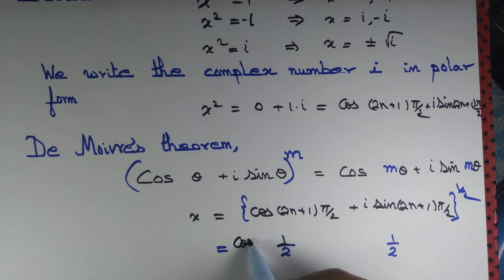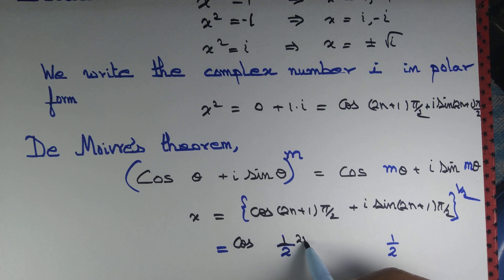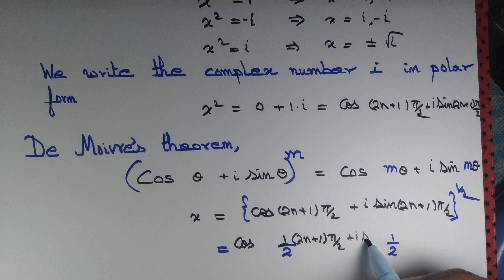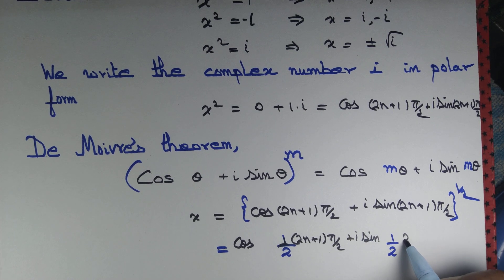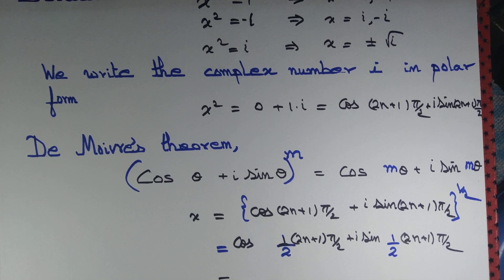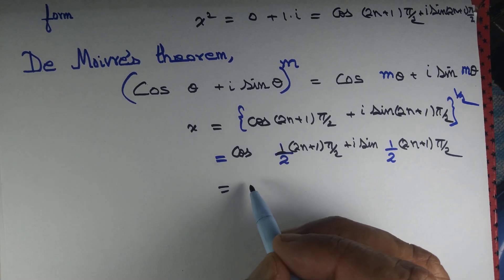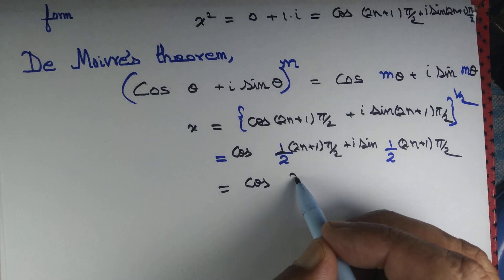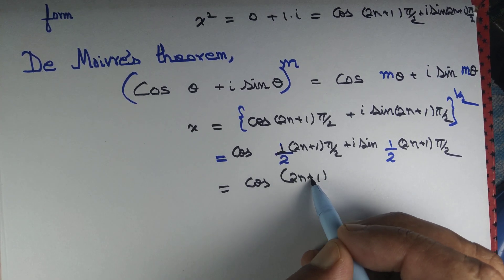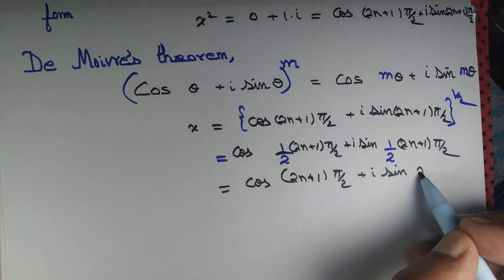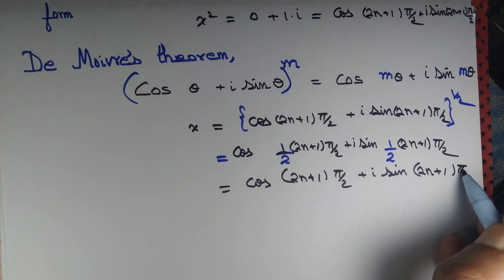So we get x = cos((2n+1)π/4) + i sin((2n+1)π/4), by multiplying the angle (2n+1)π/2 by 1/2.